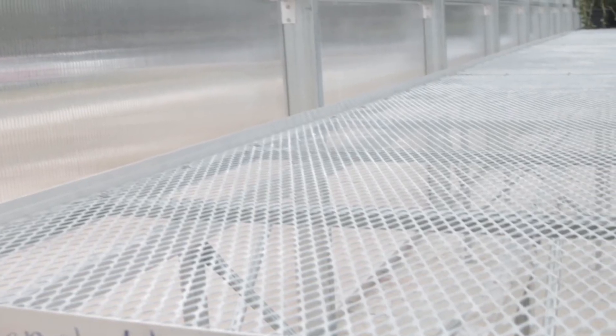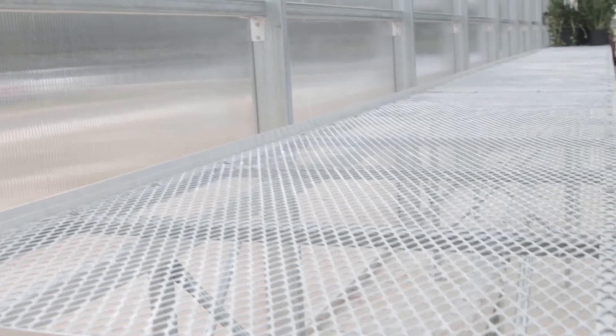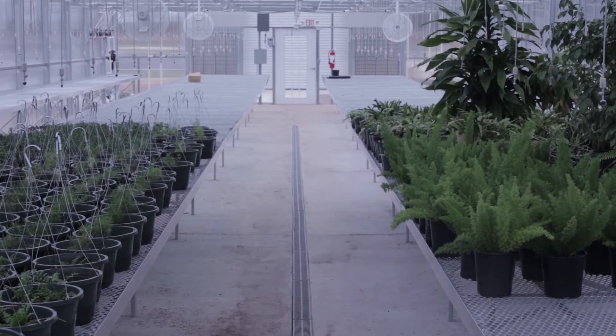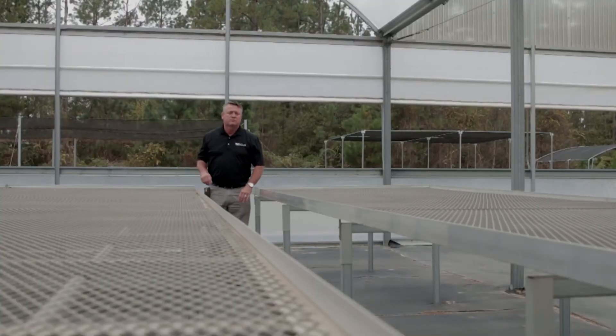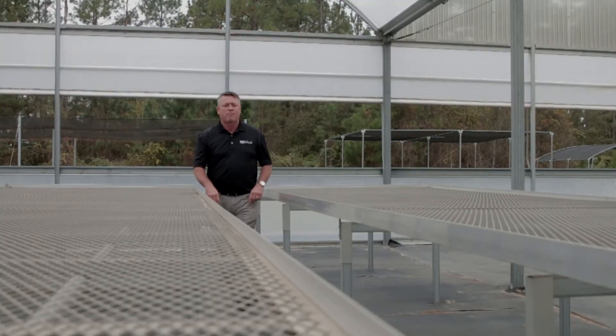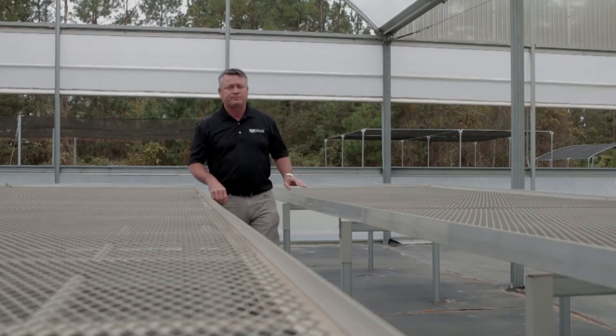Our top-quality benches are comprised of extruded aluminum, G90 galvanized framing, and a hot-dipped, heavy-duty, expanded metal bench top. They allow for ample growing space while increasing greenhouse efficiency. Our benches are built to last and provide for years of maintenance-free use.